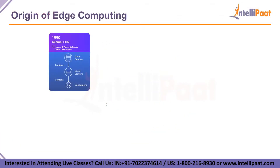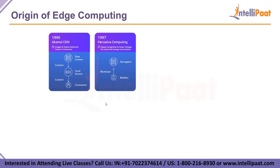The origin of edge computing can be tracked back to the 1990s, when Akamai launched its content delivery network, or CDN. The idea back then was to introduce nodes at locations geographically closer to the end user for the delivery of content such as images and videos. After that, in 1997, work demonstrated how different types of applications — like web browsers, video, and speech recognition — running on resource-constrained mobile devices can offload certain tasks to powerful servers. The goal was to relieve the load on computing sources and to improve the battery life of mobile devices.